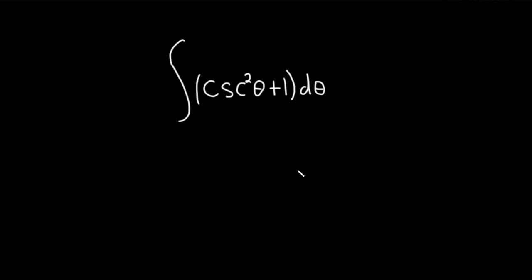In this problem we are going to try to integrate cosecant squared of theta plus one. To do this we need to think about what we know about cosecant squared theta in terms of derivatives.